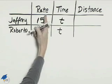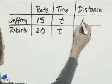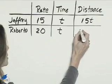The distance we can find by using the formula distance equals rate times time. And so for Jeffrey, the distance is 15t, and for Roberto, the distance is 20t.